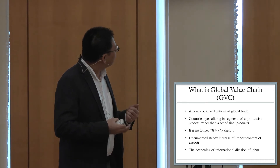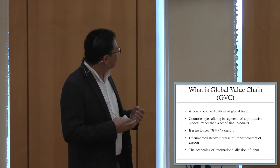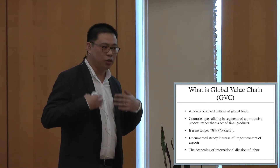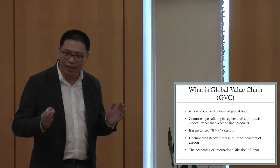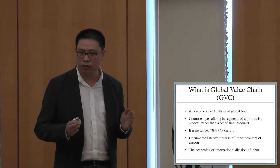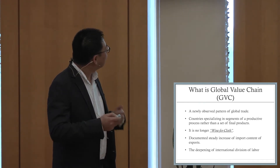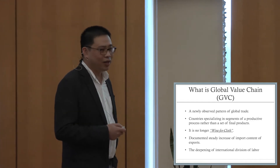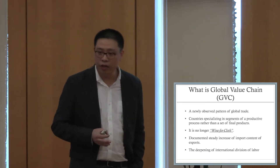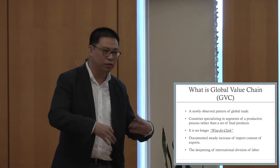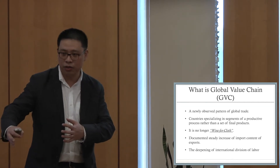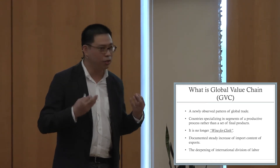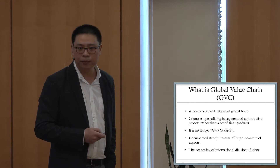The existence of global value chains is mainly documented by the steady increase of import content of exports — the exports that a country ships out to another country contain higher imported content. This is viewed as a process of deepening international division of labor: one country produces and adds some value, ships to another country which adds some value, ships to a third country, and in the end it becomes the final product.